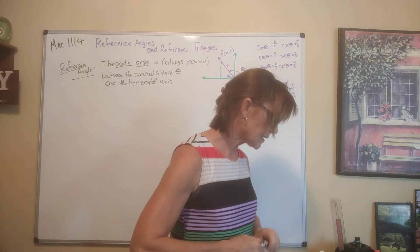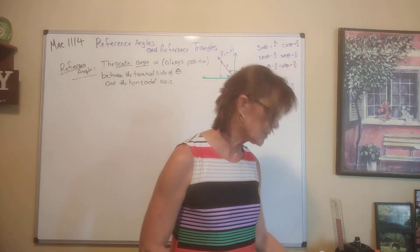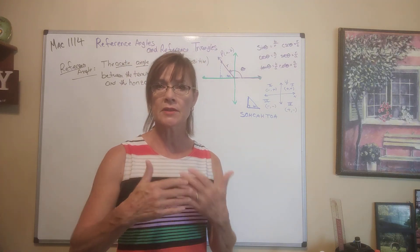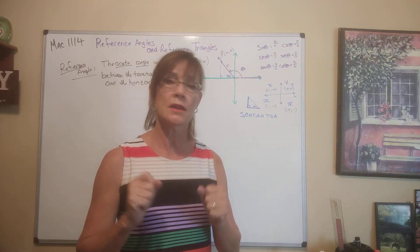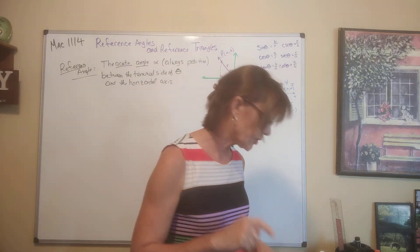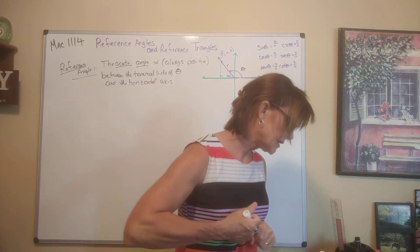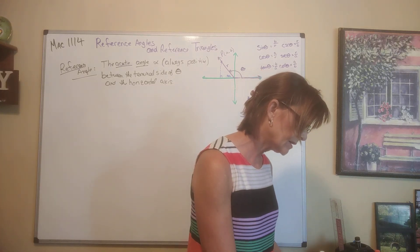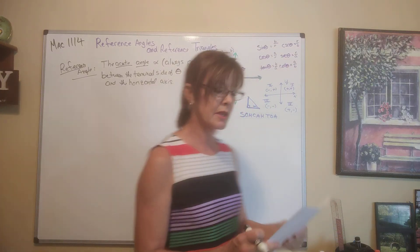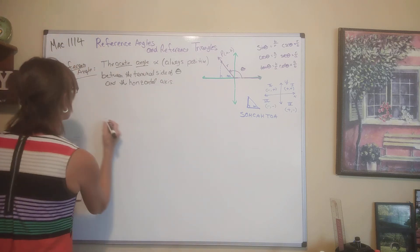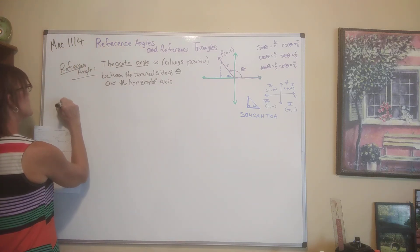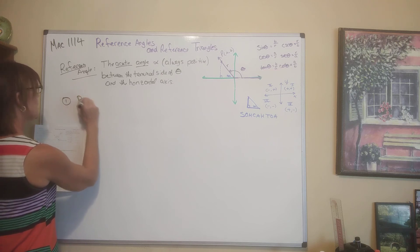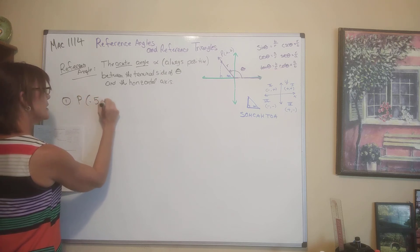The first example says find the exact values — not approximate, not rounded from a calculator, but with the square root in it or as a fraction — of the six trig functions if the terminal side of an angle x contains the point negative 5, negative 12. So the point P is negative 5, negative 12.